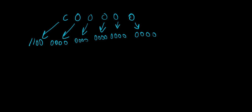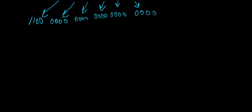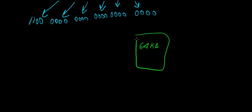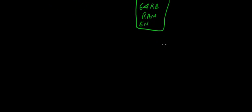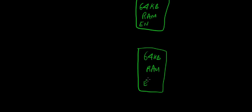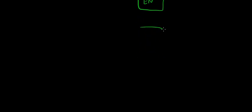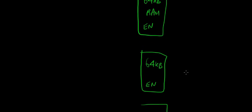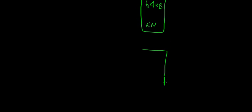The question asks us to create a 256 kilobyte memory block using 64 kilobyte RAM blocks. So we need four 64 kilobyte RAM blocks to create this. That's the first step — four of these blocks, and each one has its own enable pin.